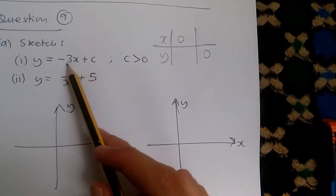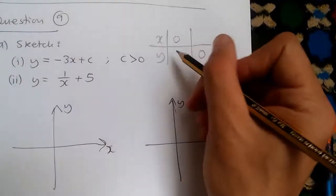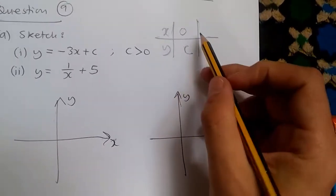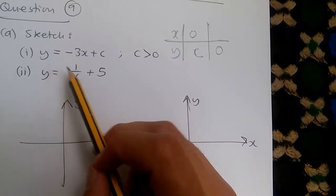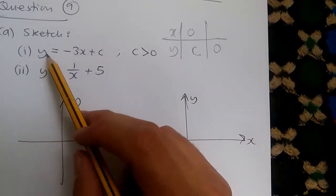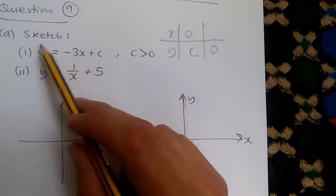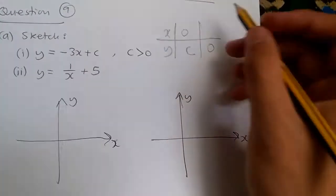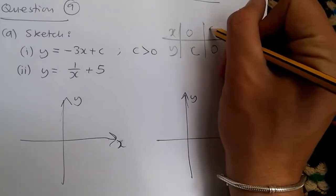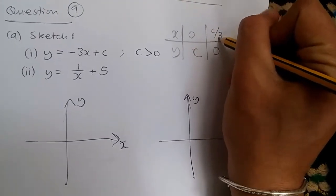So when x is 0, what do we get? When this is 0, we're left with y equals c. And then another one, when y is 0, we're left with minus 3x plus c equals 0. So adding 3x across and dividing by 3, we should get c over 3.